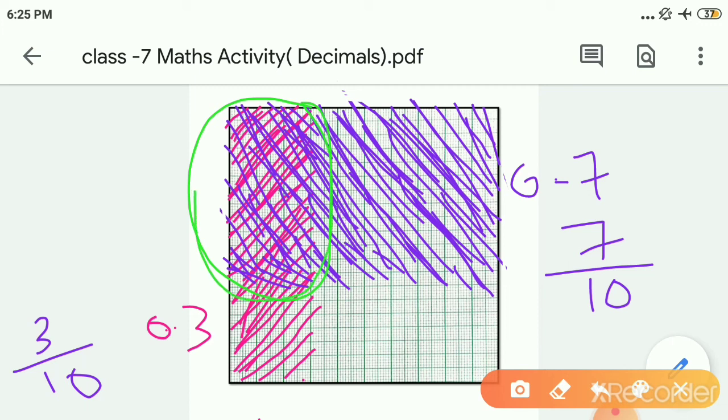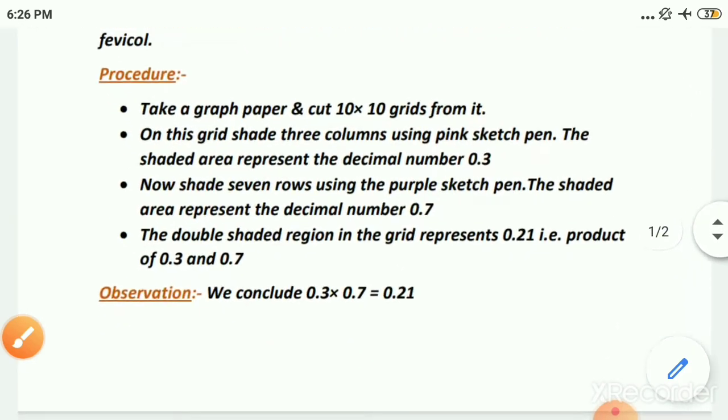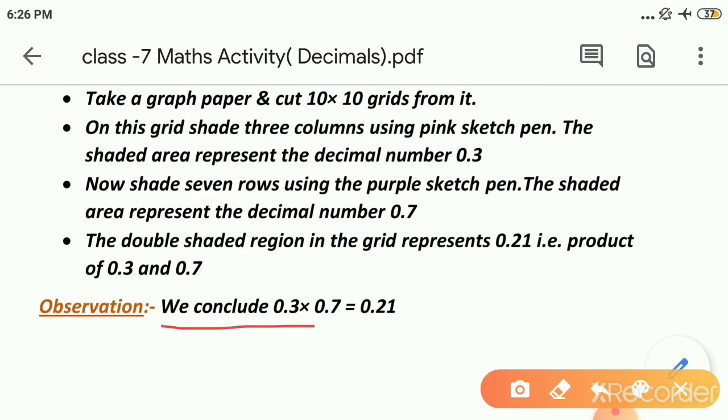So when you count the boxes, number of boxes, it will be 21. And 21 boxes out of how many? 100. Because total 100 boxes are there. And out of 100 boxes, 21 were double shaded. And double shaded portion will show us what? The product of these two. So 21 upon 100 will show us 0.21. When we write in decimal. So that is why the double shaded portion will show us the product. So I hope the activity is clear to everyone. So what is our observation with this activity? That 0.3 into 0.7 equals to 0.21.